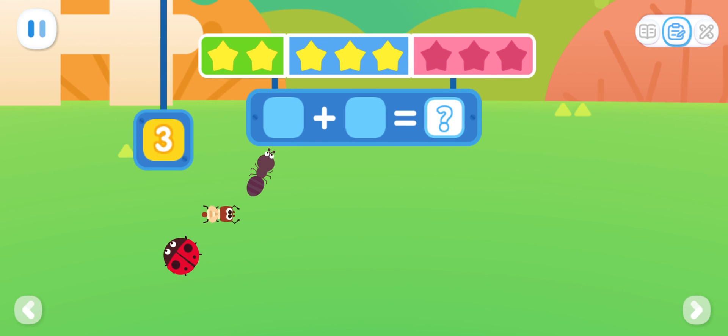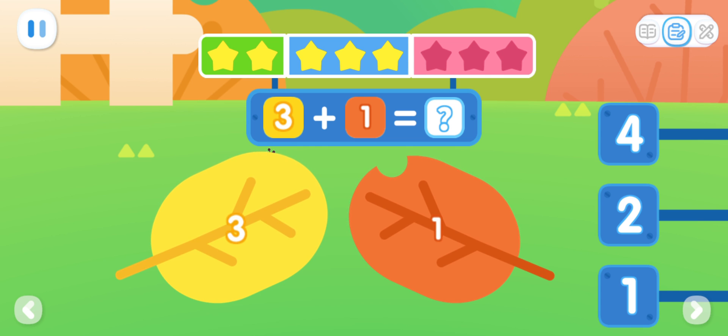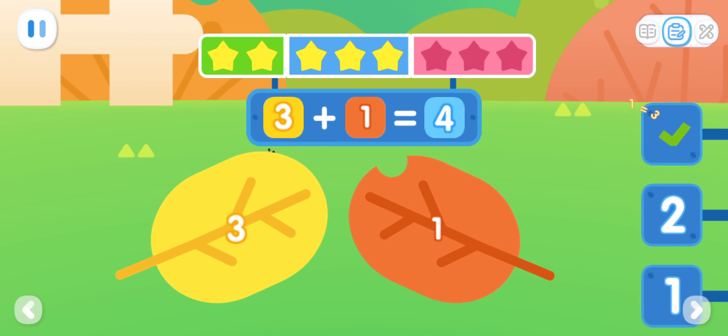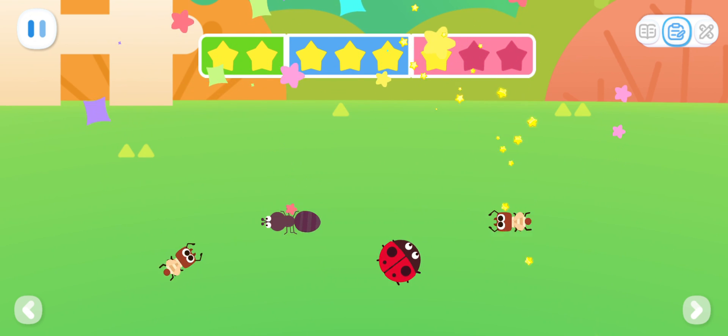There are three insects under the yellow leaf. There is one insect under the orange leaf. How many insects are there in total? You've got it! Three plus one equals four.